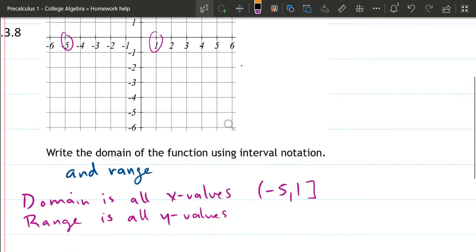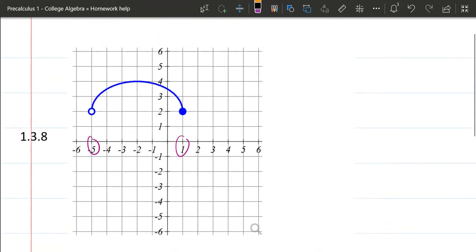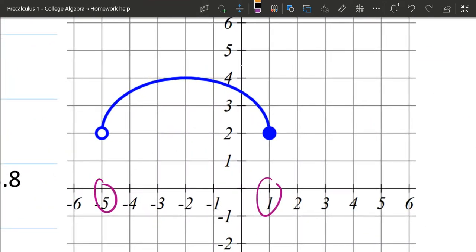So now the range is all the y values. We're going to look at the y values here. We're definitely going from 2 to 4 and all the y values in between. The only question is, do we include 2? Do we include 4? We'll start with 4.